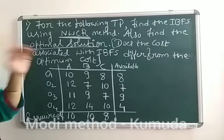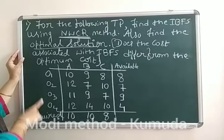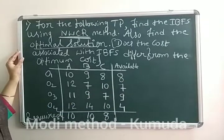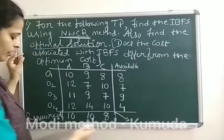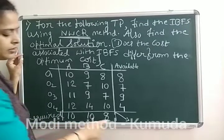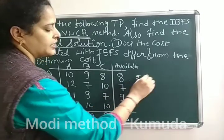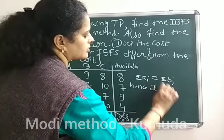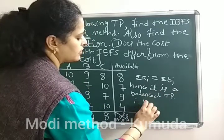The question asks us to solve the transportation problem using NWCR for IBFS and extend to the optimal solution. The problem has four origins O1, O2, O3, O4 and three destinations A, B, C, with given supply (available) and demand (required) values. The first condition before solving is to check whether sigma AI equals sigma BJ. Here, 10 plus 10 plus 8 equals 28 on both sides, so sigma AI equals sigma BJ — it is a balanced TP and a solution exists.